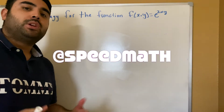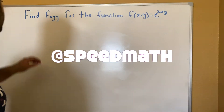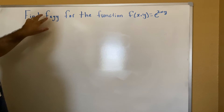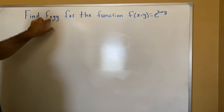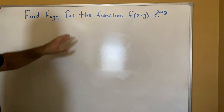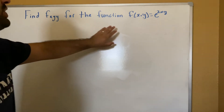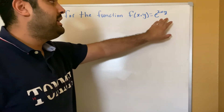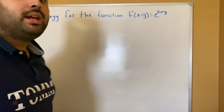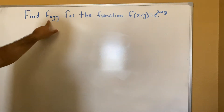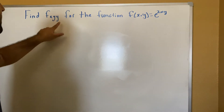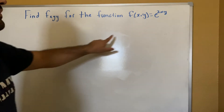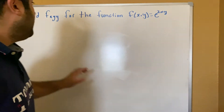Hello, welcome. So today we have a question. It says find the partial of x, y, y for the function f of x, y is equal to e to the 2xy. Now what this simply means is to find the partial derivative of the given function.